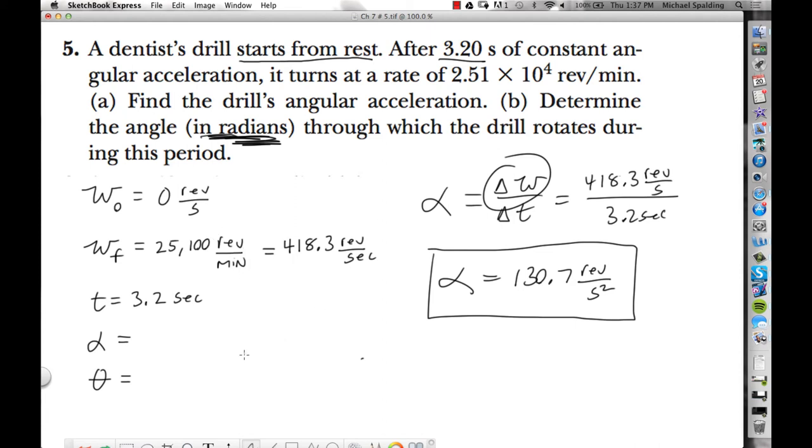So how many revolutions does this make? Well let's see, we could do theta equals one half alpha t squared plus, this is the first kinematic, does that look familiar? Okay, so the initial angular velocity was zero.